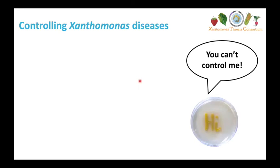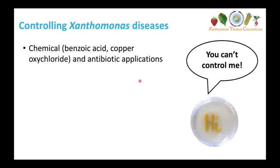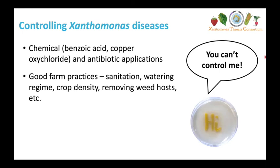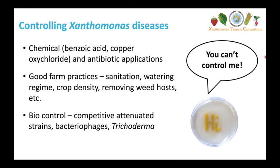So how do we control Xanthomonas diseases? We can use chemical and antibiotic applications, but with the increasing problem of antibiotic resistance, we don't really want to be applying these to our field vegetables, and they only have limited effects — they can minimize infection but can't prevent it. We can use good farm practices such as sanitization of seeds and farming equipment, using watering regimes that reduce splash, and reducing crop density. We can use biocontrol methods like competitive attenuated strains that outcompete the pathogenic strains, bacteriophages, and beneficial fungi like Trichoderma, which have been shown to cause induced systemic immunity.